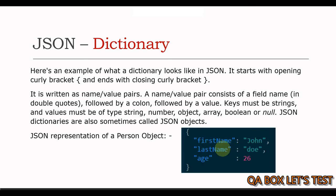A dictionary is written as name-value pairs. A name-value pair consists of a field name in double quotes followed by a colon followed by a value. Keys must be strings and the values must be of type string, number, object, array, boolean, or null. JSON dictionaries are also sometimes called JSON objects.